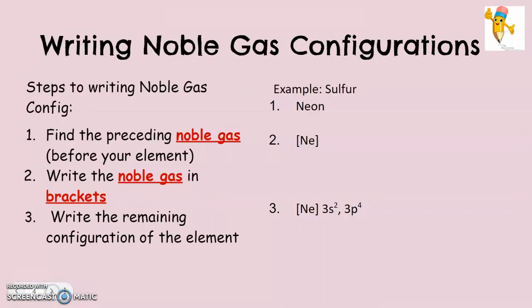So let's talk about the steps for writing noble gas configuration. Nothing is changing in terms of where the position of the elements are. So we're still talking about our S block, P block, D block, and F blocks. All we're doing is shortening the configuration. We're kind of like chopping off the first part of it until we get to a noble gas.